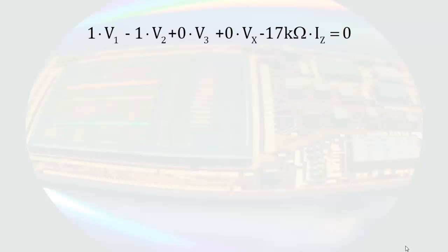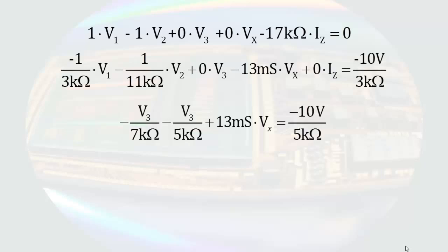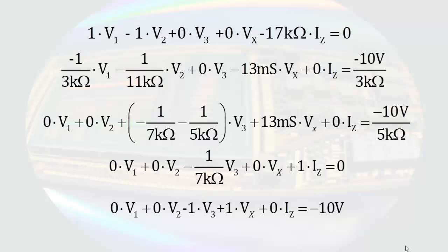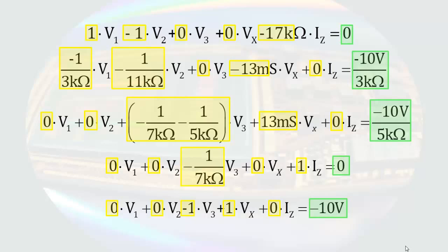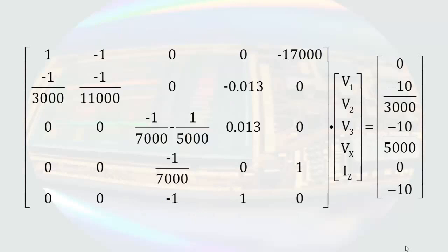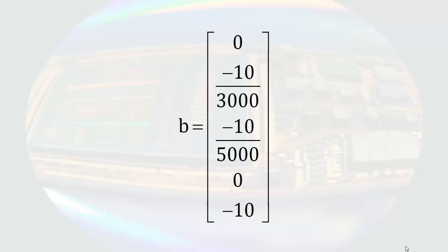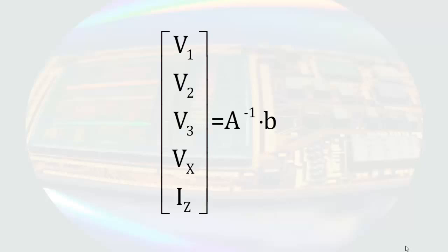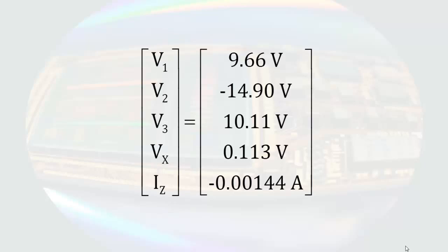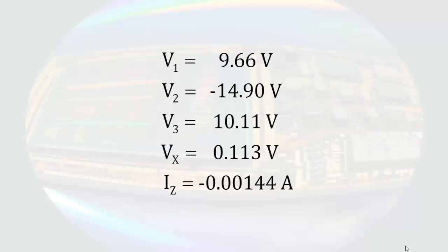Now we have a set of coefficients that modify the variables and a set of coefficients representing the constants. The system of equations written in matrix form looks like this. To solve using a calculator, we enter the 5 by 5 coefficient matrix, then enter the column vector of the numbers on the right side of the equation. If we apply the inverse matrix of A to both sides, we have a column vector of the variables and a column vector of the solutions. These column vectors represent the solution to each of the unknown voltages and currents.